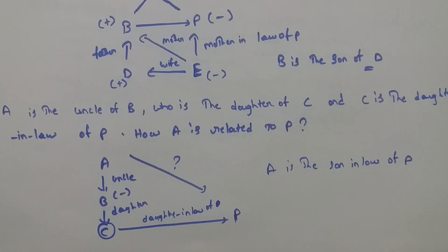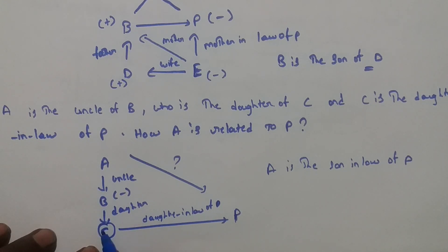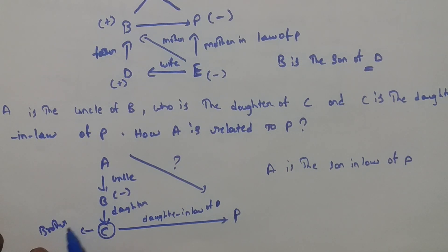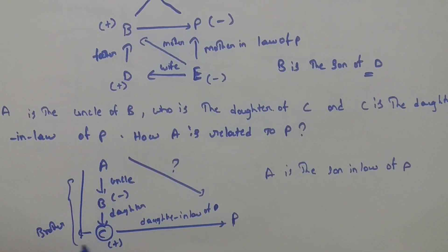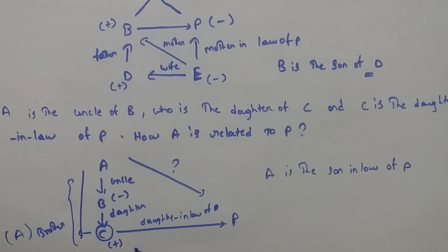Uncle's daughter means A is related to C as a brother — that's a plus symbol. Brother's daughter-in-law equals son-in-law. So the answer is A is the son-in-law of P. I hope you liked this video — please subscribe.